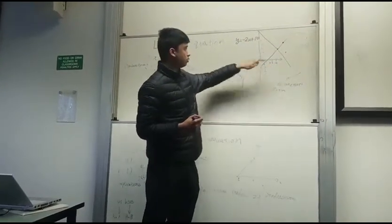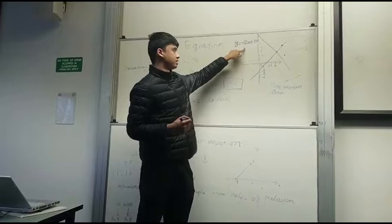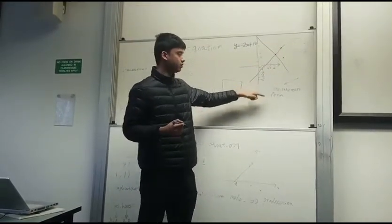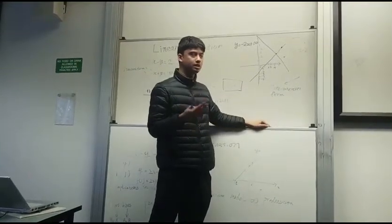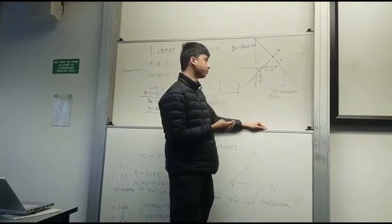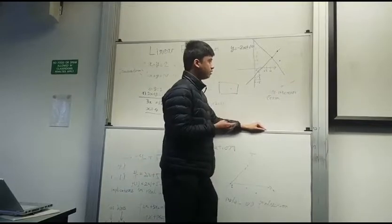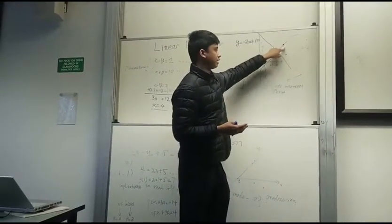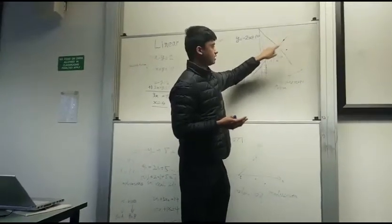This downward slope is y equals negative 2x plus 10, and this upward slope is y equals x minus 2. This is written as slope-intercept form because it's easier to graph. This is a system of linear equations, so you have to find the red point, not the blue or black points, because this is where the two equations intersect.